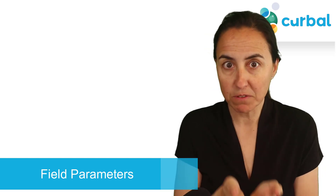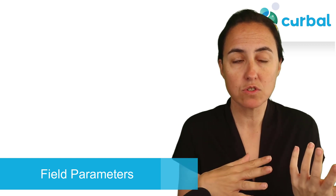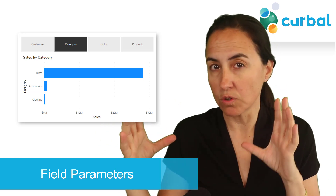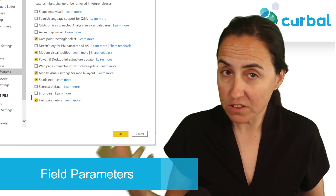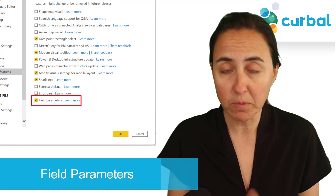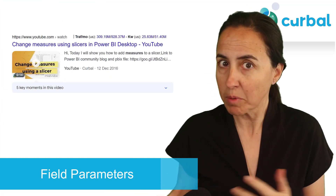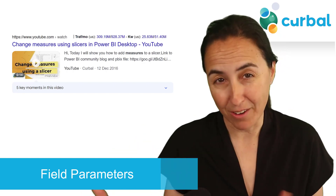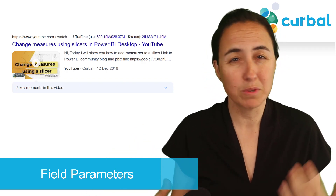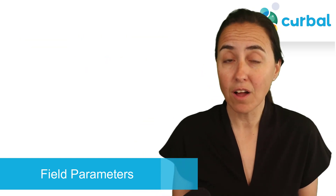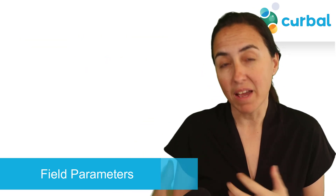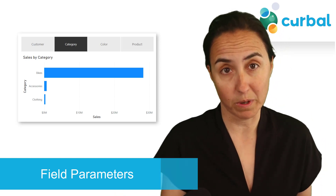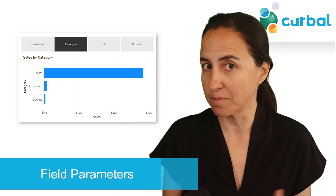The next feature is field parameters. This is basically a feature that will allow you to dynamically change the dimensions or measures that are shown on the visual. There are tons of hacks for doing this — you could use bookmarks, you could use DAX. But now it is out of the box, which is a lot better. You don't need to be a super user to do that. Be careful though, because it makes the report a lot more complicated and it will fit in some cases, but not always.